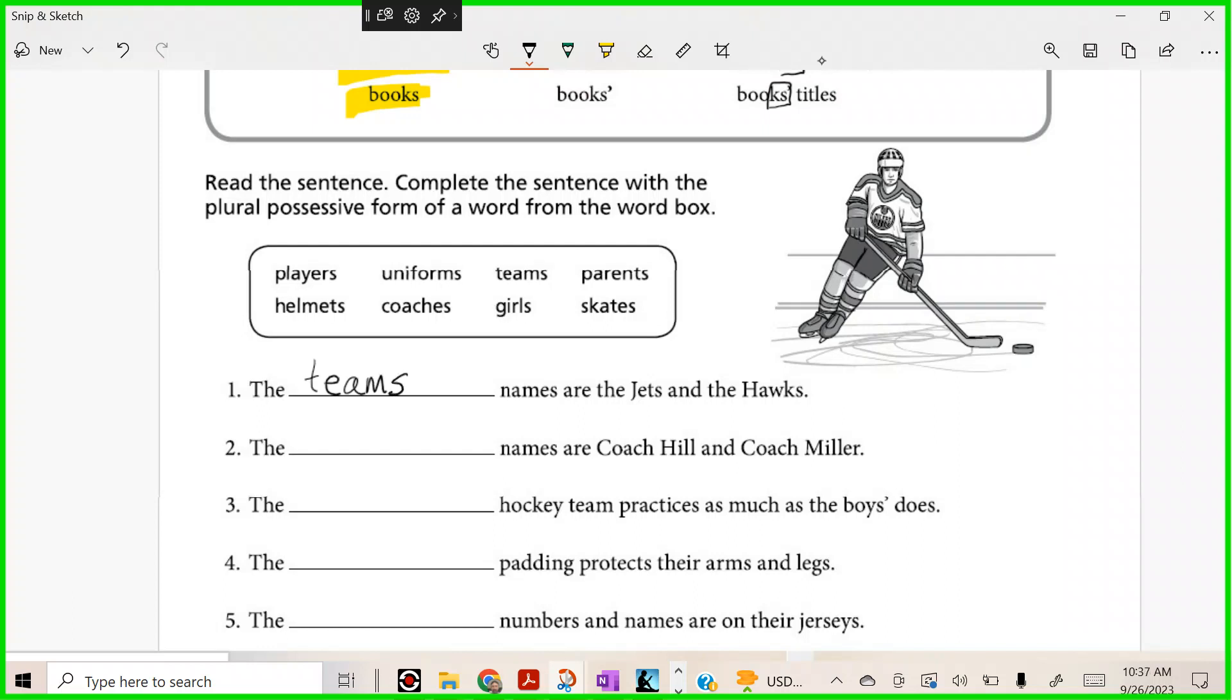If I did apostrophe s, how many teams would there be? One. We want to show many, so what do we need to do? We want to do s apostrophe. Let's try another one, Rocco. The blank names are Coach Hill and Coach Miller.